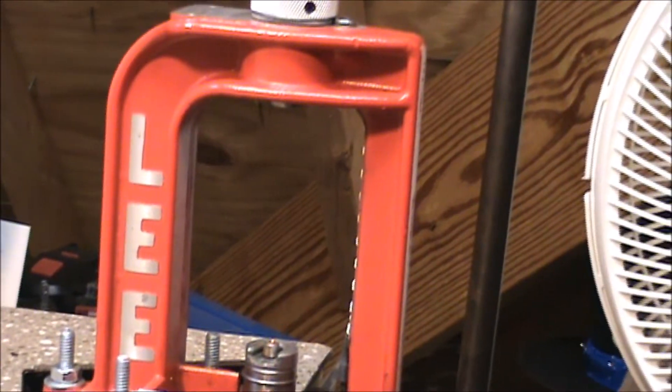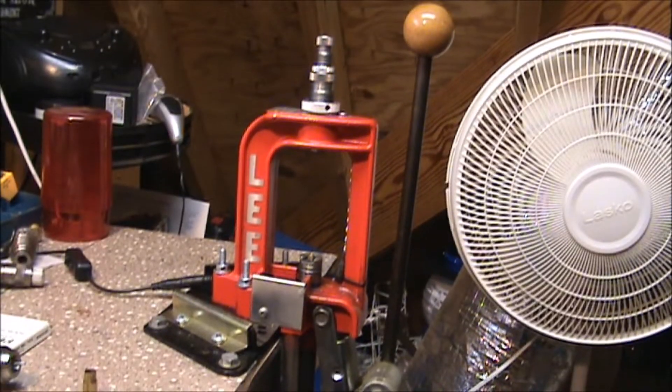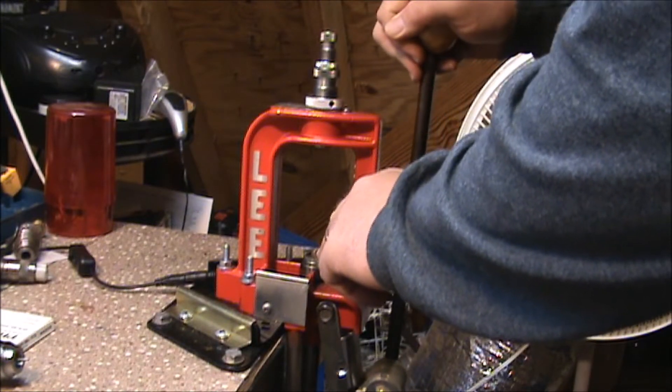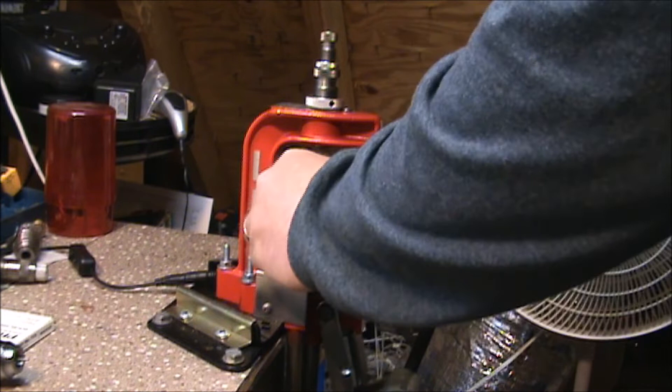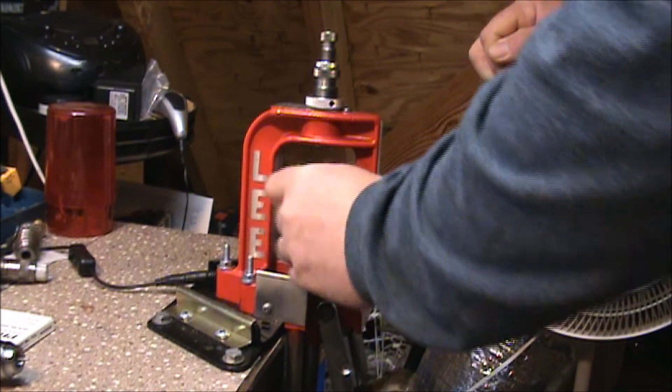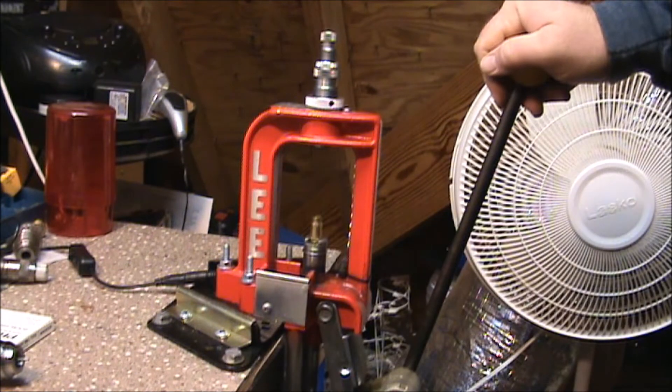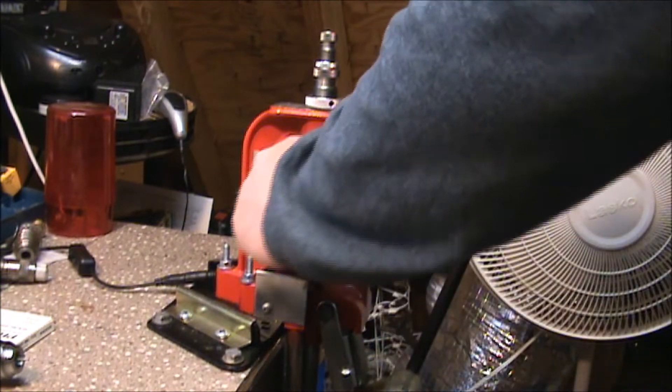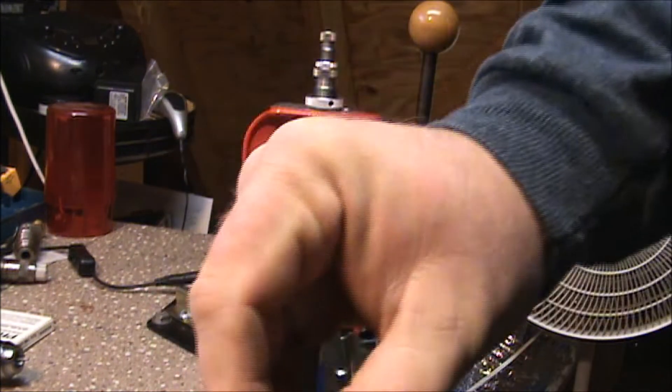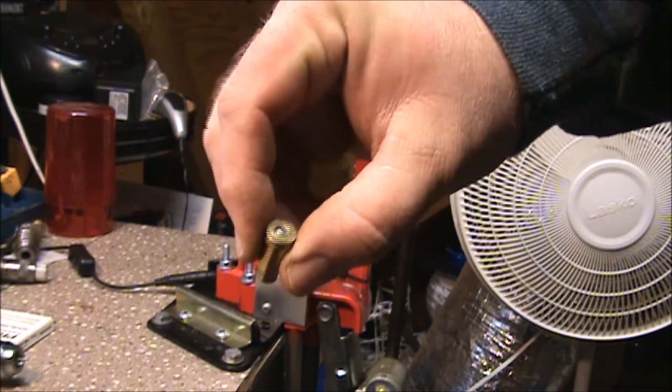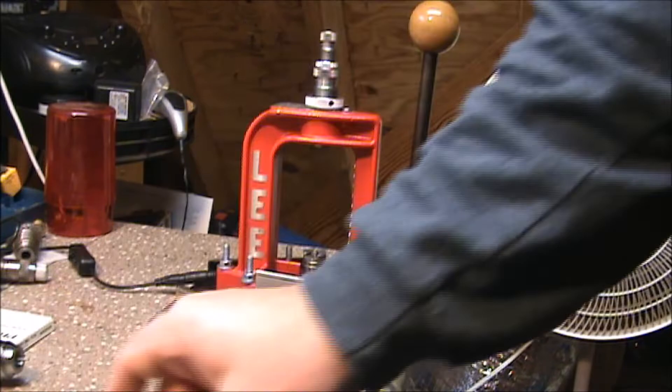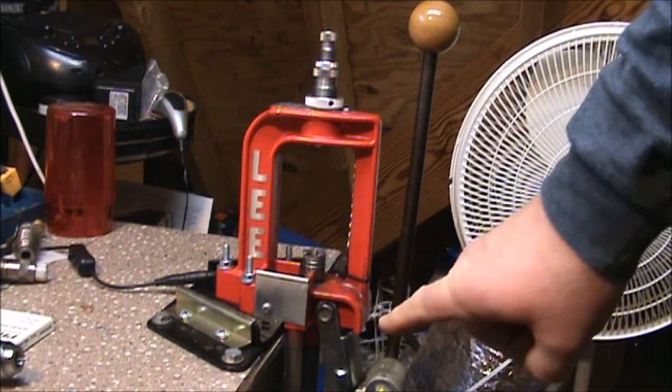I have the hand press. I'll usually sit down and do a lot of them like that, but this is only a small batch so we'll just use the press. Basically you just put your primer in the cup, raise it up slightly, put your brass in, and then push down on the downstroke. And you have a piece of primed brass.